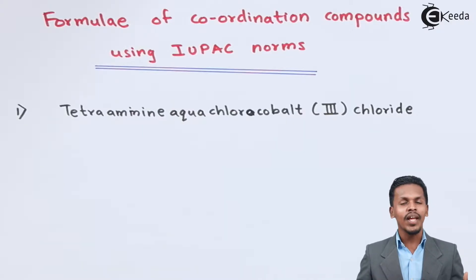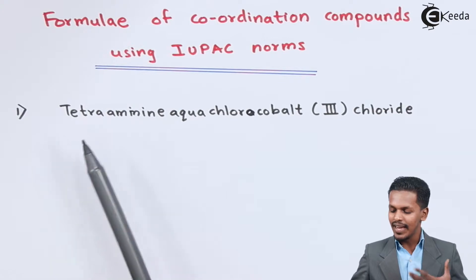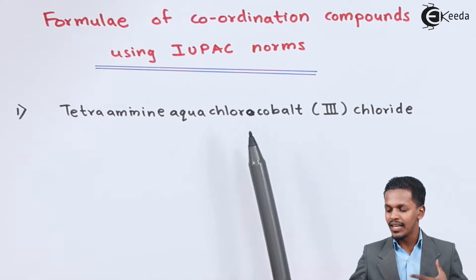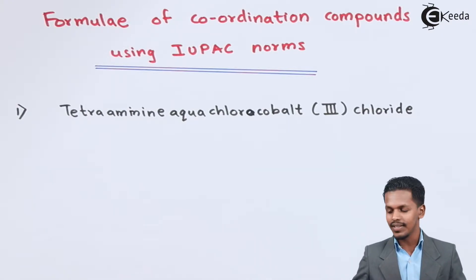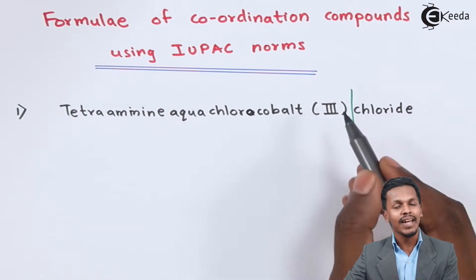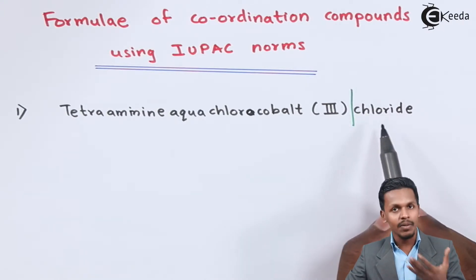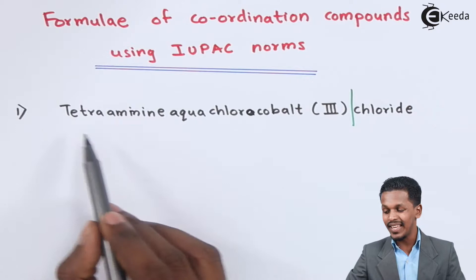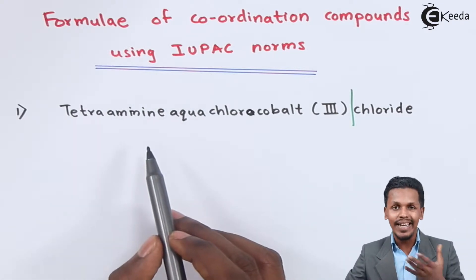In this topic we are going to talk about how we can give the chemical formula to the IUPAC nomenclature for a complex. The first example is tetraamine aqua chlorocobalt(3) chloride. There are two parts here: the primary entity and the secondary entity. We don't know how many moles of the primary atoms are present, but we have details about the secondary entity or coordination ligands.